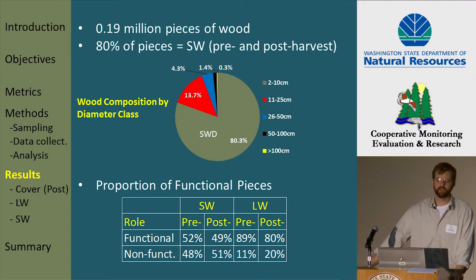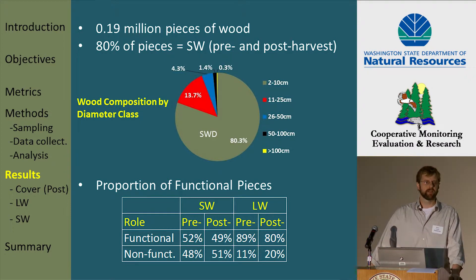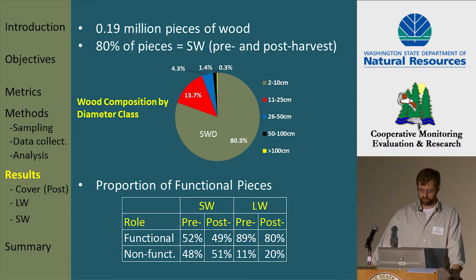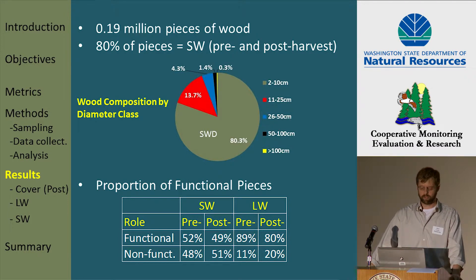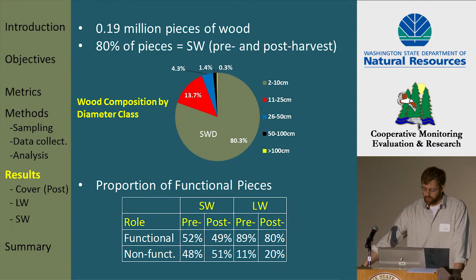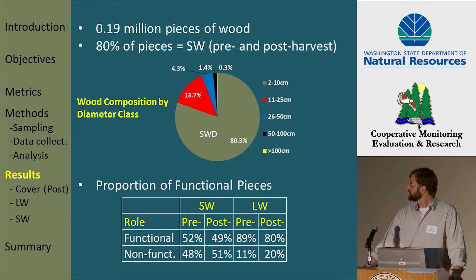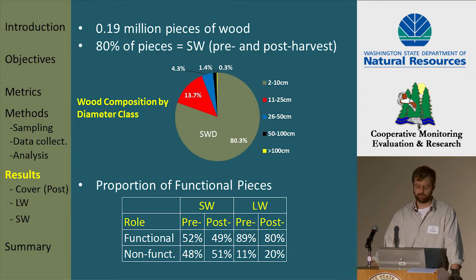First, some general results. We counted over 190,000 pieces of wood — a number that is, if for no one else, for Tim Quinn, who's really fond of talking about sticks in millions. Of the total wood count, 80% of all pieces by count were in fact small, and that 80% held true for both the pre- and post-harvest period. This pie chart shows that as diameter class increases, the proportion of the sample decreases, with very few pieces in our two largest size classes.